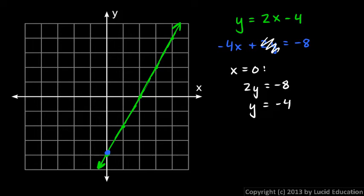If y is 0, then that term goes away, and we have negative 4x equals negative 8. When y equals 0, we have negative 4x equals negative 8. So that means x has to equal 2. That's this point right here. Look at that. If we connect those points, we get this line right here.